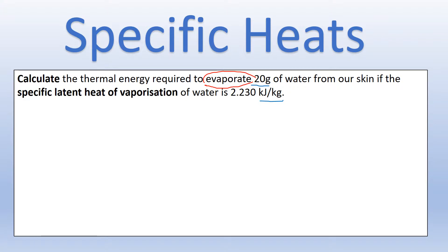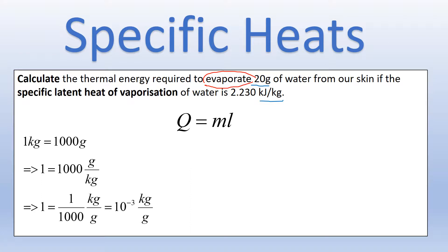We're dealing with a state change, so we're going to be using this equation to model state changes. We're also going to need to convert our 20 grams into kilograms. You should know that one kilogram is one thousand grams. I'm going to rearrange it to make one gram the subject, so that any time you see a one gram in the equation, we can replace it with 10 to the minus three, or one over a thousand, kilograms per gram.